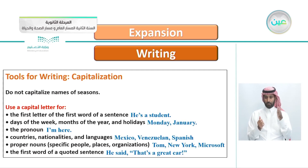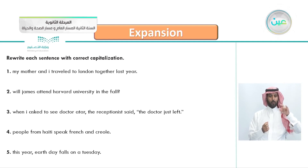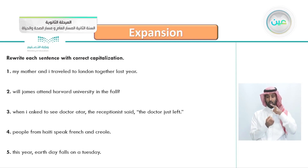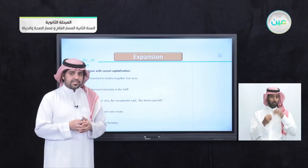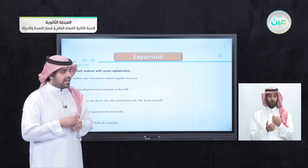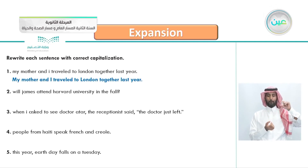Now let's go to the next exercise: rewrite each sentence with the correct capitalization. Each sentence has mistakes regarding capitalization. The first one: 'my mother and i traveled to london together last year.' The correction: 'My' with a capital M because it begins the sentence, 'I' with a capital I as the pronoun, and 'London' with a capital L. Excellent.